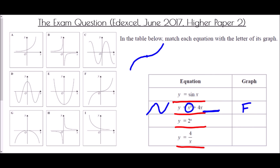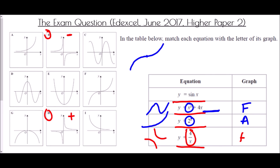Next, y equals 2 to the x must be an exponential graph — starting low then getting steeper and steeper. Graph A clearly matches that shape, so the answer is A. Finally, y equals 4 over x is a reciprocal graph, which should have that characteristic two-branch shape. We have two candidates that look similar, but the important difference is sign: since 4 over x is positive, the correct graph is H. If it were negative 4 over x, we'd use the other one.